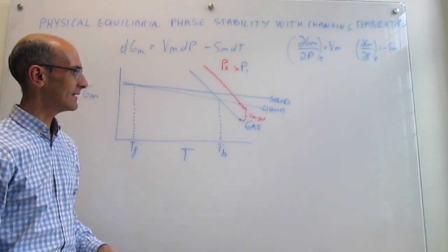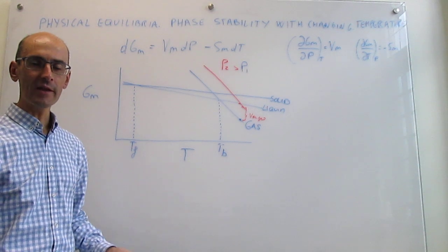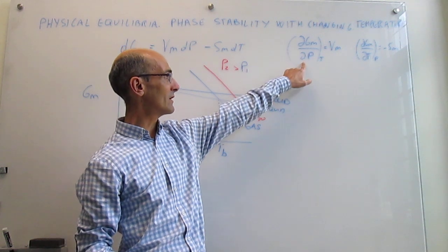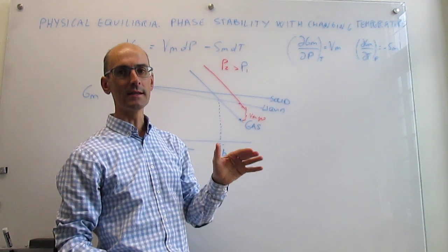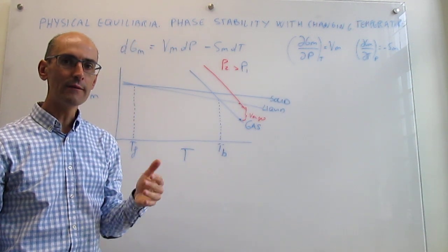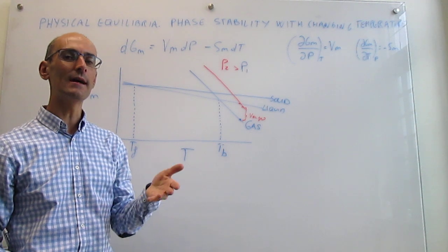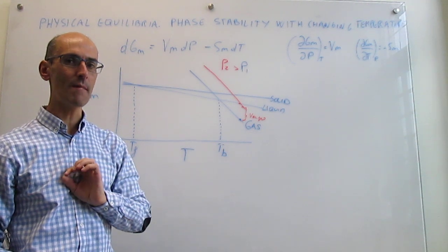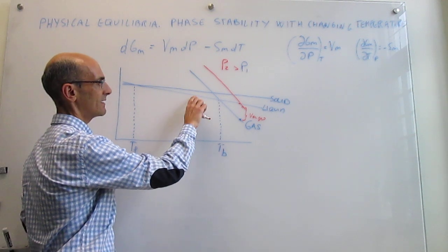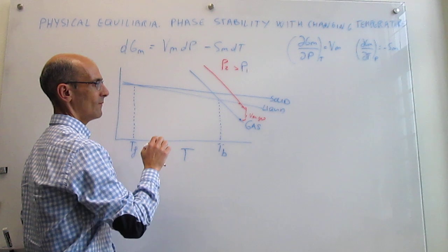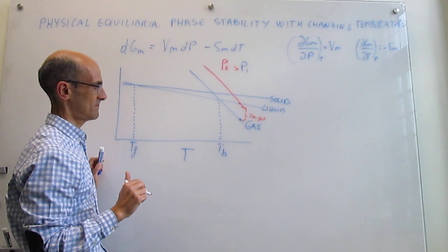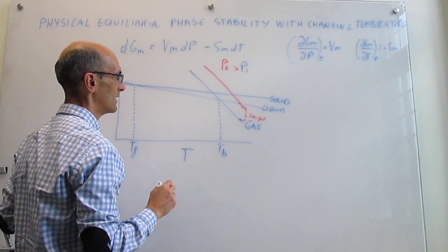What is going to happen for the liquid and the solid? The same thing is going to happen — if you increase the pressure, the molar Gibbs energy should also increase, and it does so by the molar volume of the phase. But for the solid and the liquid, the offset — that molar volume — is much smaller than that of the gas. So what I will have are lines that are a little bit higher, but the offset of these lines compared to that of the gas is going to be much, much smaller.